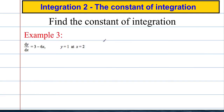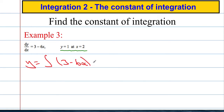Now, what about finding the constant of integration? We're still going to integrate like before, and then we're going to use boundary conditions — that information will help us find c. So if dy/dx = 3 − 6x, we integrate to get y: y equals the integral of 3 − 6x with respect to x. Integrating 3 gives 3x; increasing the power on 6x gives x² and multiplying by 1/2 means 6 times 1/2 is 3. So y = 3x − 3x² + c.